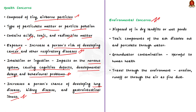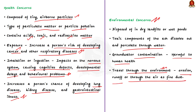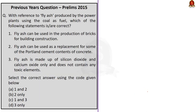When ash is disposed of in dry landfills or wet ponds, it leads to environmental effects. The toxic components dissolve out, percolate through water, and lead to groundwater contamination — harmful to human health especially when it is a source of drinking water. Fly ash also travels through the environment through erosion, runoff, or as fine dust in the air. These are the important points about fly ash.